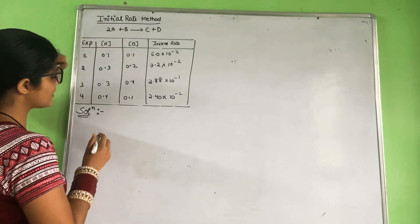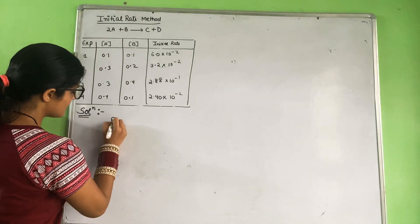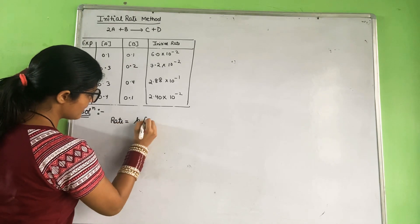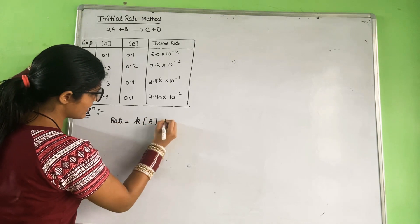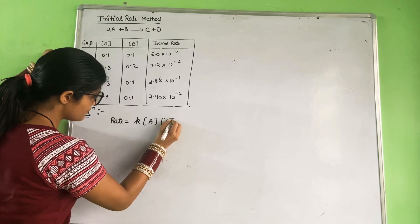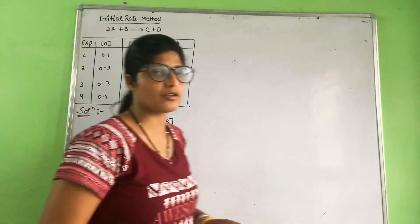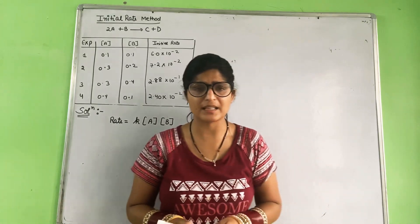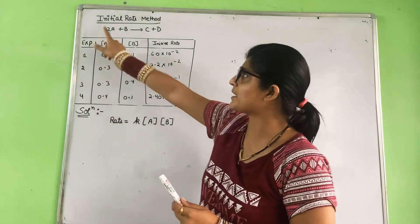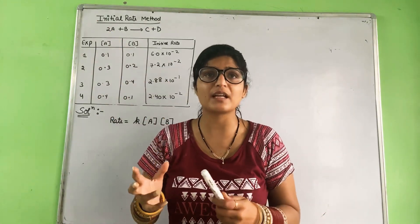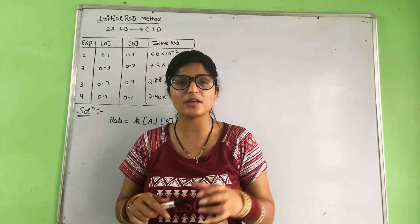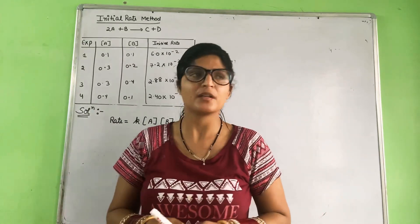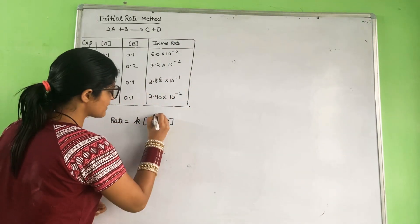This is our general reaction written in rate law form. We will use the initial rate method to determine the order. The rate law is written as Rate = k[A]^m[B]^n, where m is the order with respect to A and n is the order with respect to B.